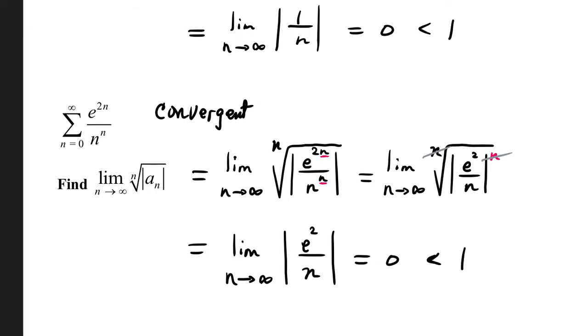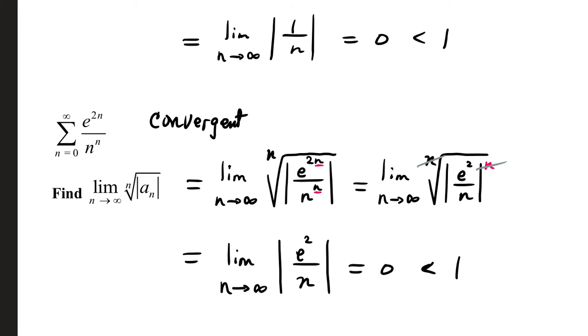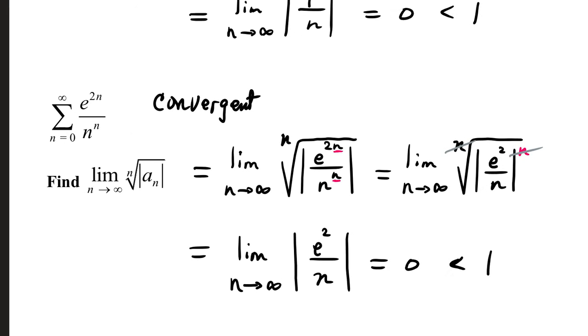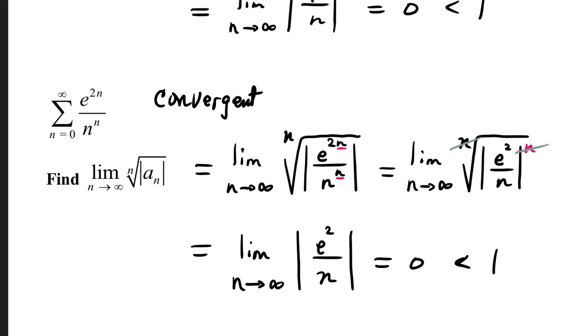Our next example, we have the sum from 0 to infinity of e to the 2n over n to the n. Let's set up our limit and apply the root test. We're going to go limit as n goes to infinity, nth root of our a sub n term.